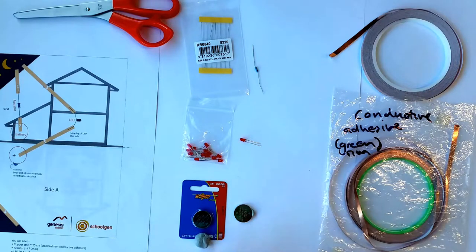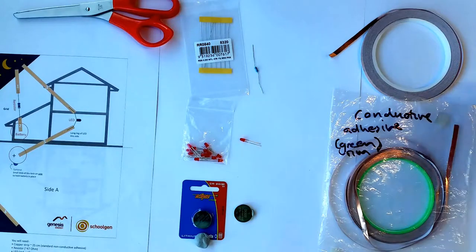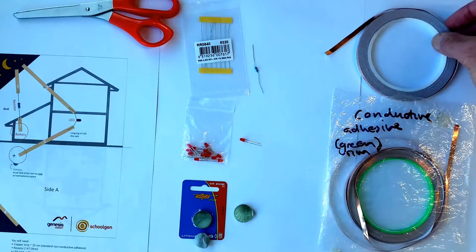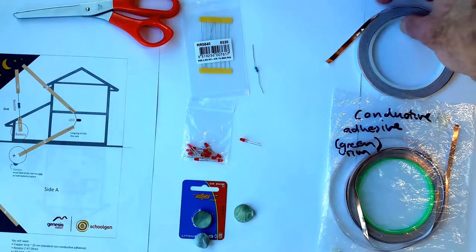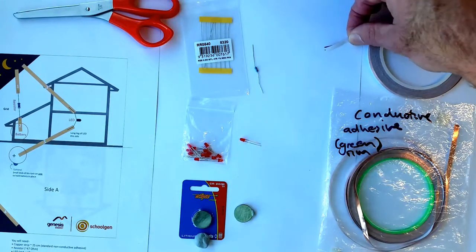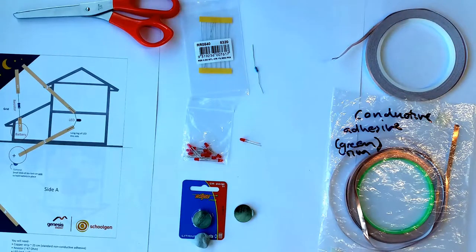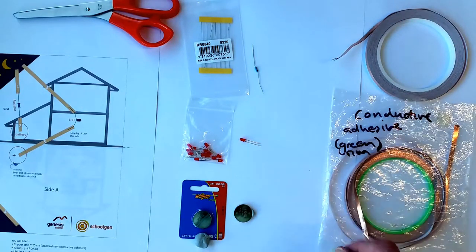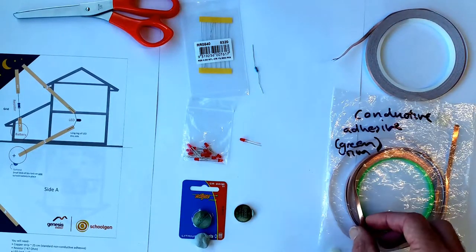To wire it all up, we're going to use this copper tape. It has an adhesive backing on it so you can pull it off and stick it down. It's also recommended that you get some copper tape that has a special conductive adhesive on the back.